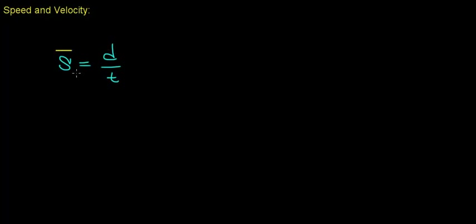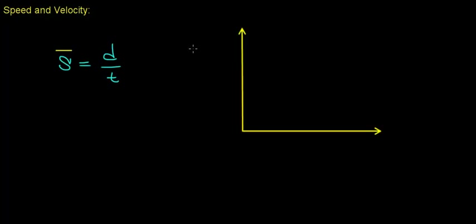This relationship is often called the average speed of an object over a distance, because the speed an object travels over this distance could be greater than or less than this calculated value, but over this distance the speed averages out to be one number.